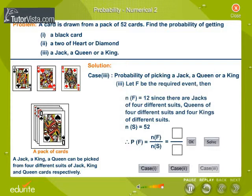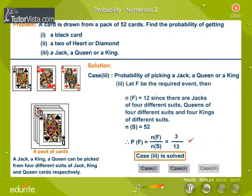Therefore, P(F) is equal to N(F) by N(S). Find the value of P(F) by substituting the values N(F) and N(S). Therefore, P(F) is equal to 3 by 13. Hence, case 3 is solved.